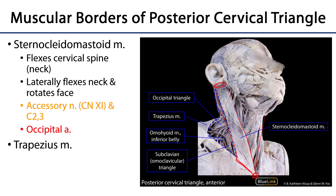If only one sternocleidomastoid contracts, it laterally flexes the neck and rotates the face toward the contralateral direction. The SCM has dual innervation: its efferent innervation is cranial nerve 11, the accessory nerve, and its afferent innervation comes from branches of the ventral primary rami of cervical nerves C2 and C3. It is supplied with blood from the occipital artery.